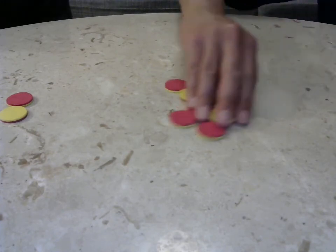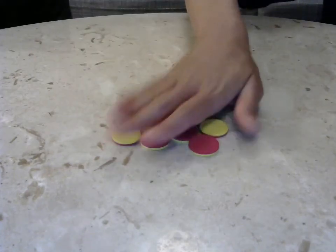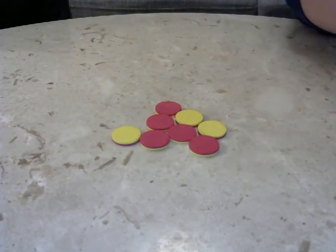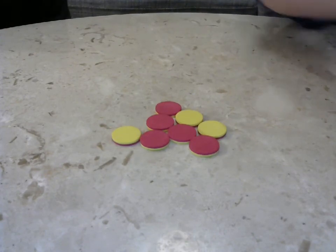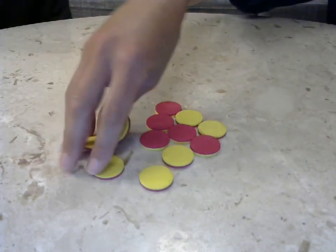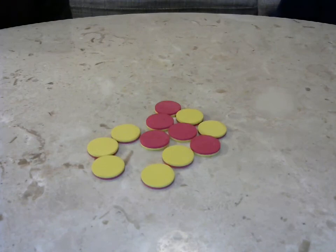And the next time that Steven and I play, we might say instead of starting with eight, maybe we should start with 12. And so we can put a few more counters in there and we can begin with another number.